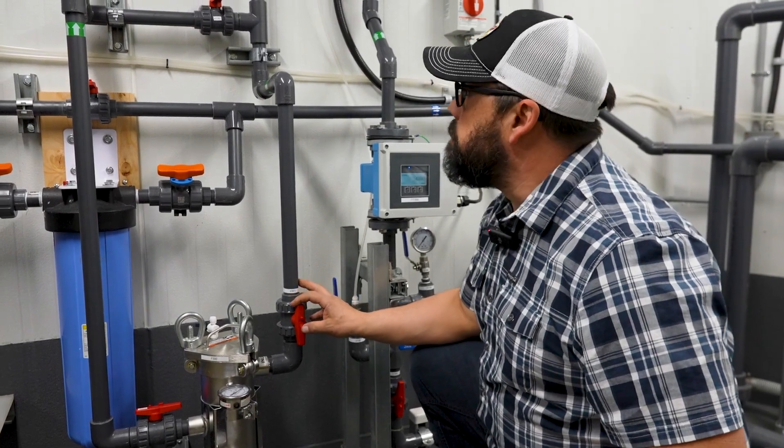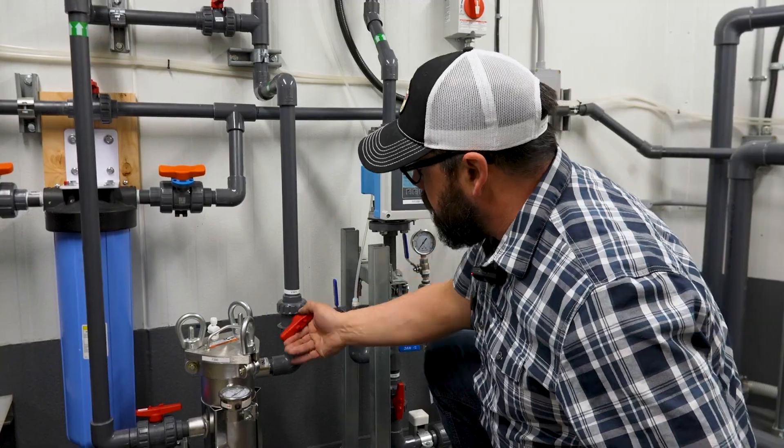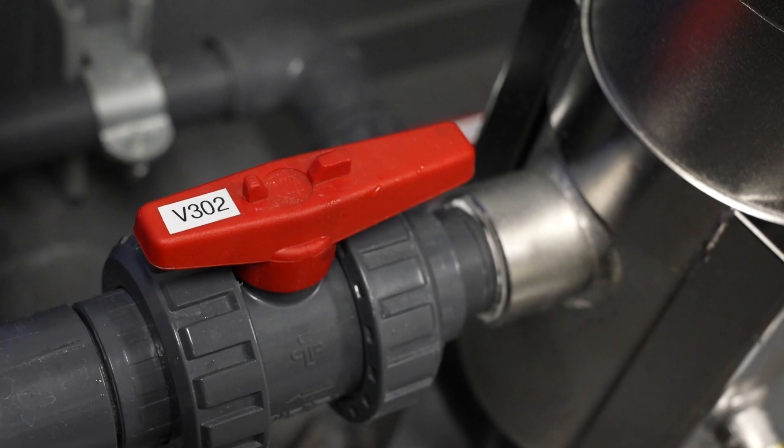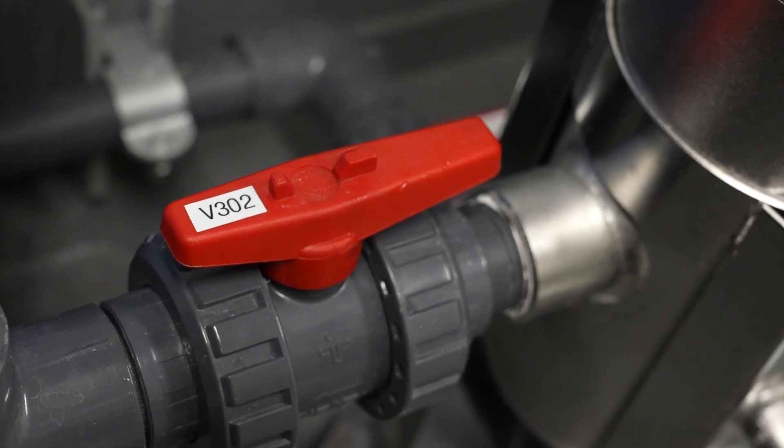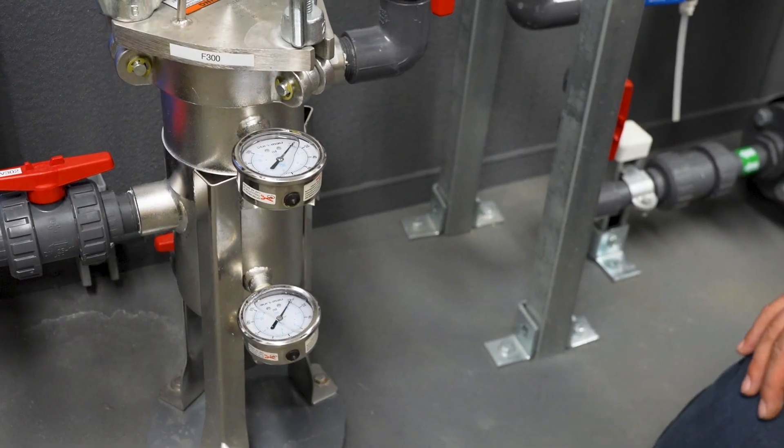Now the maintenance on this is pretty straightforward. You isolate your flow coming into the unit by shutting this valve off. You isolate your flow out of the unit by shutting it off. Now you shut these valves off so you don't drain the water out of the rest of your system.